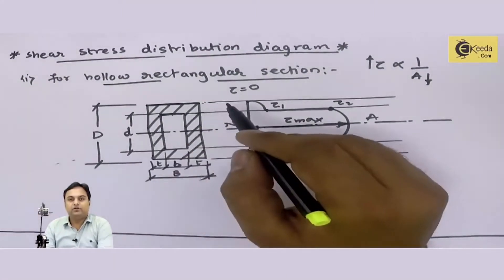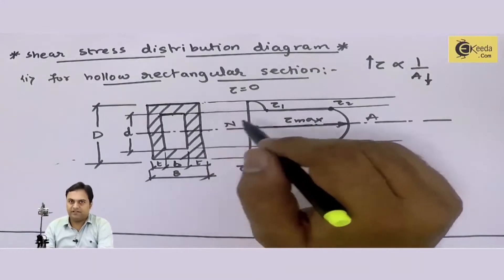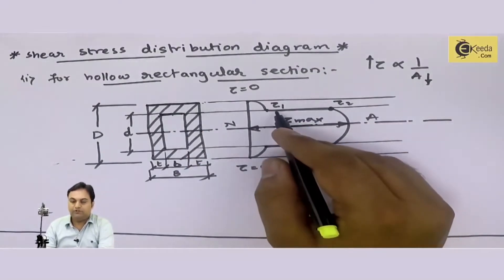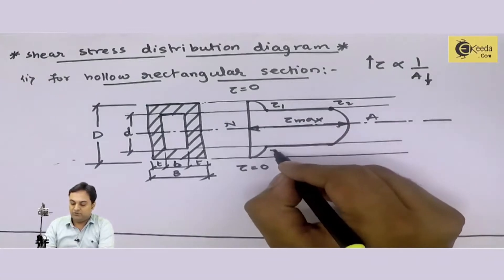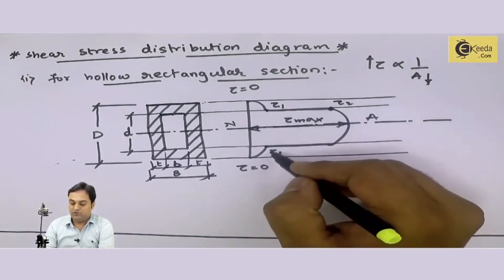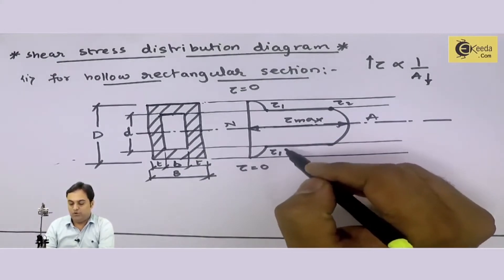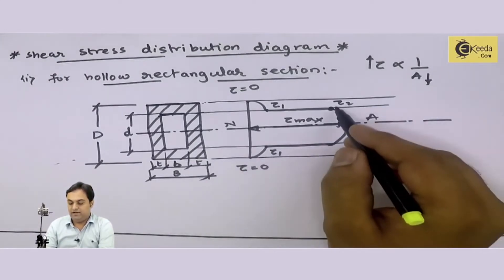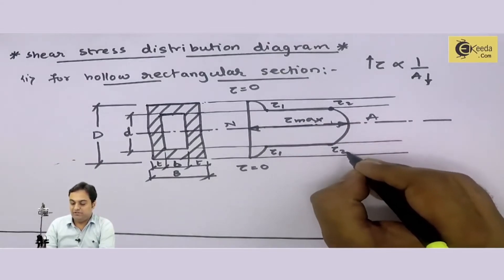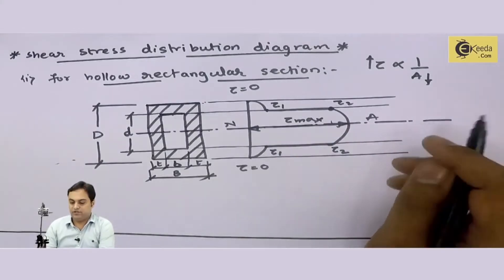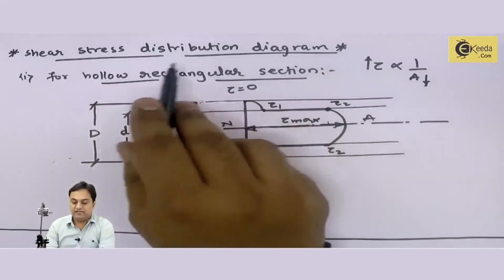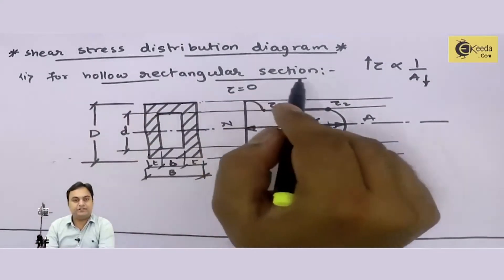Since this rectangular cross section is symmetric, if you get a tau1 value above the neutral axis, you will get the same tau1 value below the neutral axis. So this is the concept for the shear stress distribution diagram for a hollow rectangular section.